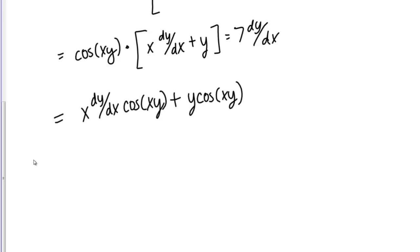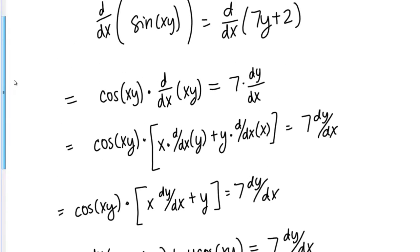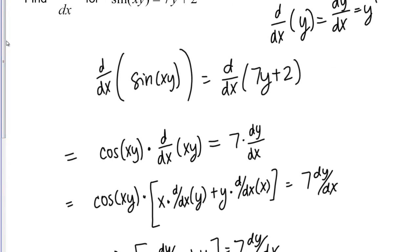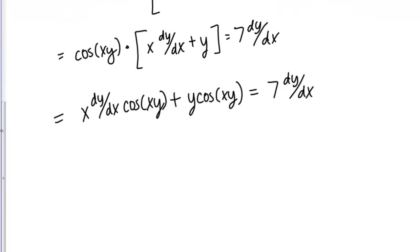I just distributed that cosine to both terms inside the parenthesis. Then on the right hand side I have my 7 dy/dx. Now we're not done yet. Even though we've actually taken the derivatives, we haven't solved for dy/dx. The directions say to find dy/dx.